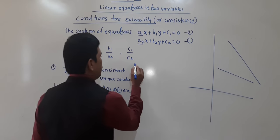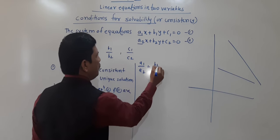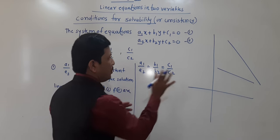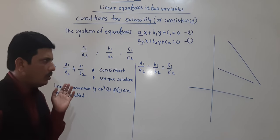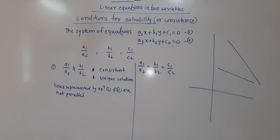Now the second condition: when a1/a2 is equal to b1/b2 is equal to c1/c2 — meaning all three ratios are equal. When all three ratios are equal, the lines represented by equation 1 and 2 are consistent and coincident lines.